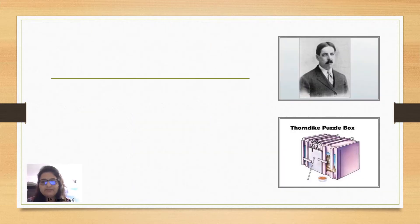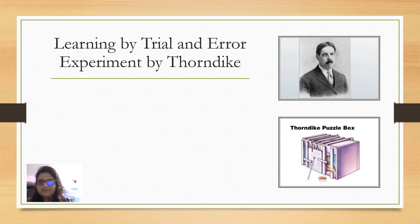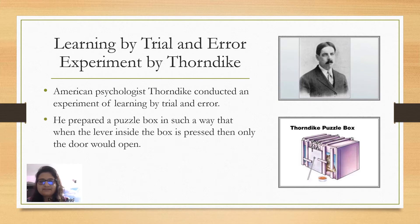The second method is Learning by Trial and Error. We will study the experiment given by Edward Thorndike. American psychologist Thorndike conducted an experiment of learning by trial and error. He prepared a puzzle box in such a way that when the lever inside the box is pressed, then only the door would open. Let us go through the experiment.